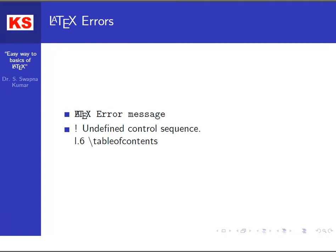As you can see, the undefined control sequence is shown, followed by 1.6 backslash tableofcontents. That means when LaTeX finds an error like this, it normally displays the error. And when you run the LaTeX commands,